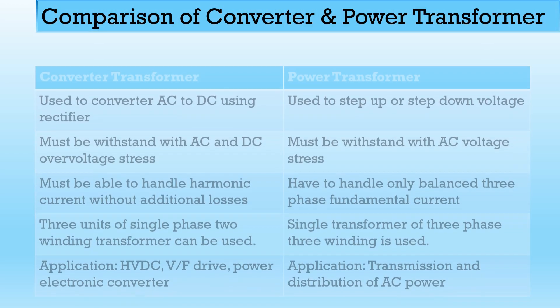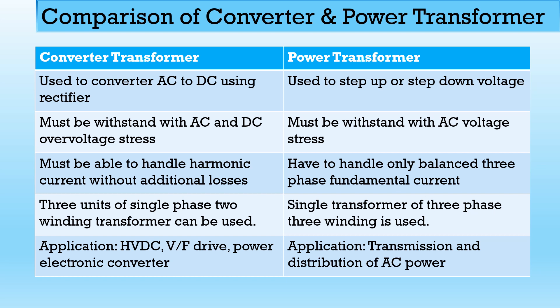Comparing the converter and power transformer: the converter transformer converts AC to DC using a rectifier, while the power transformer steps up or steps down voltage. The converter transformer must withstand combined AC and DC overvoltage stress, while the power transformer withstands AC voltage stress only. The converter transformer must handle harmonic current without additional losses; the power transformer handles only balanced three-phase fundamental current. The converter transformer uses three single-phase two-winding units, while a power transformer can use a single three-phase three-winding unit. Applications of the converter transformer include HVDC, VFD drives, and power electronic converters, whereas power transformer applications are AC transmission and distribution.